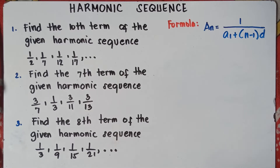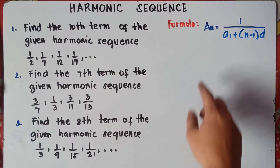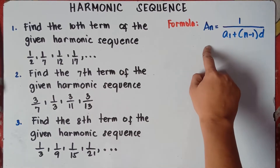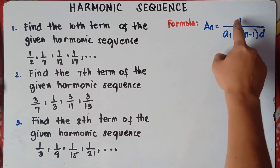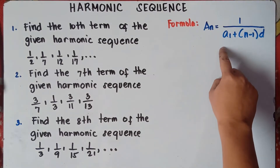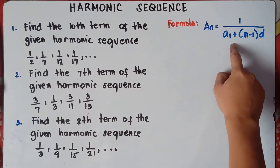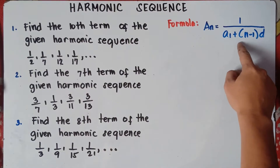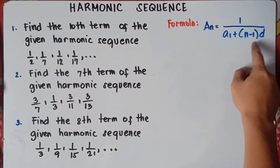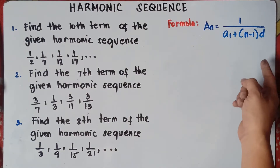The harmonic sequence class is actually the reciprocal of the arithmetic sequence. This is the formula of harmonic sequence: a sub n equals 1 all over the first term plus quantity n minus 1 times the common difference.